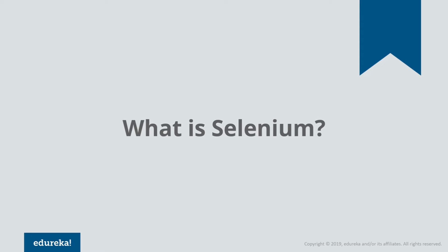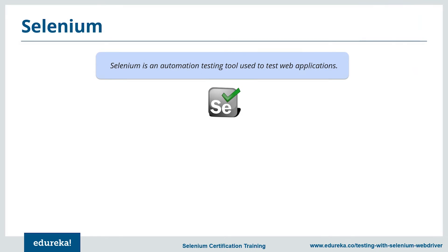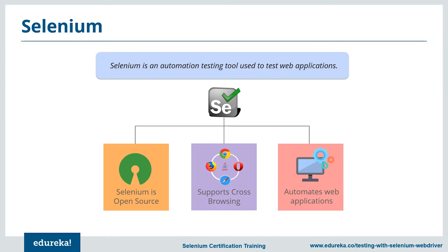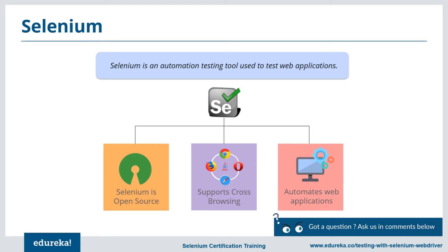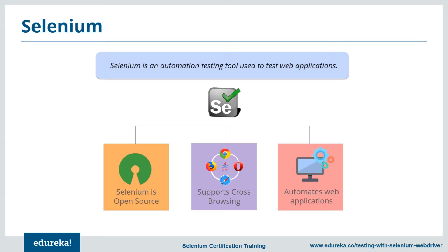Selenium is an automation tool used to test web applications. It makes the process relatively easy by providing valuable functionalities and libraries. Selenium is an open-source portable framework used to automate test cases in web applications. It can run on different browsers like Chrome, Safari, Opera, and Explorer, and supports cross-browser testing. Selenium supports different programming languages like Java, Python, Ruby, and C#, with Java being the most commonly used due to its user-friendly behavior.